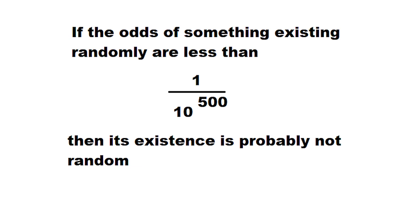Exploring the limitations we have on the universe, I think it's very safe to conclude that if the odds of something existing randomly is less than 1 out of 10 to the 500, then its existence involves a non-random process of some sort.